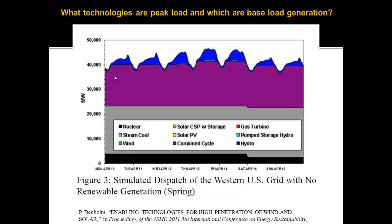Let's look at a simulated grid to figure out how the grid works in a normal time. This is in the spring for the western United States grid. The left-hand axis is megawatts and the bottom axis is time — Monday through Sunday. At all times, we want to run our nuclear and coal plants. The nuclear is shown in black and the coal in gray, and we fill in the peaks with different things. The purple is a natural gas combined cycle plant — basically natural gas that we can turn up and down pretty easily.